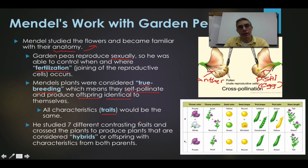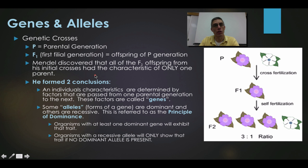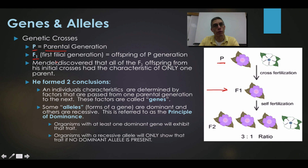If he took two plants with contrasting traits and crossed them through cross-pollination, the offspring produced were considered hybrids. Hybrids are any offspring that have characteristics from both parents — you would be considered a hybrid because you have characteristics from both of your parents. When talking about genetic crosses, we have specific names for each generation. The very first generation is the parental generation. If we cross a purple flower with a white flower, that is the parental cross, and the offspring from that cross are the F1, or first filial, generation.